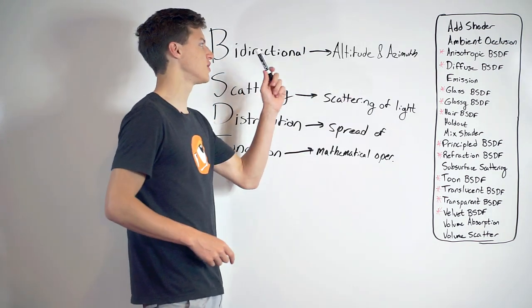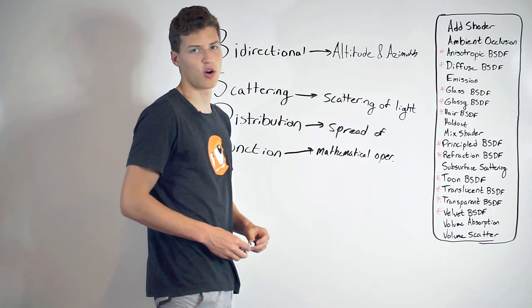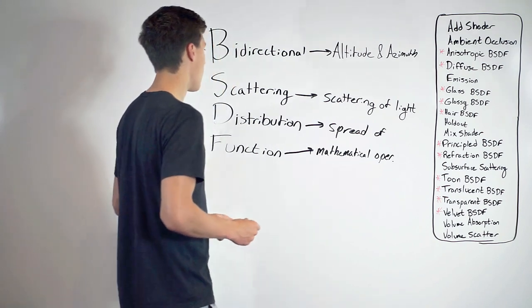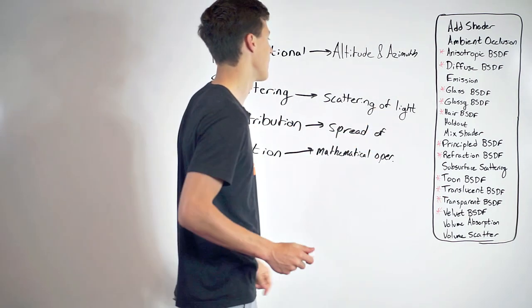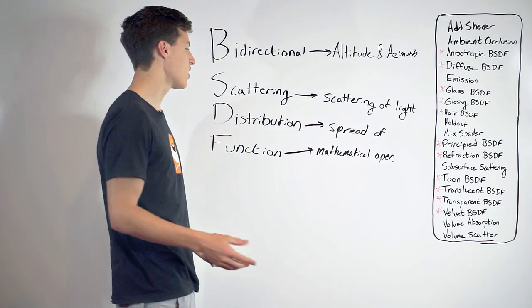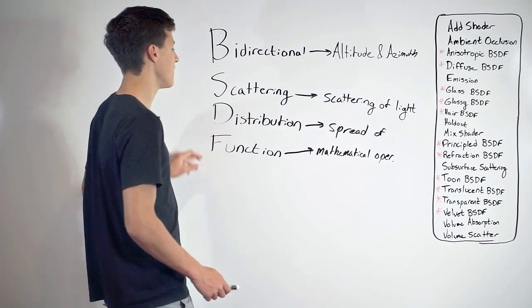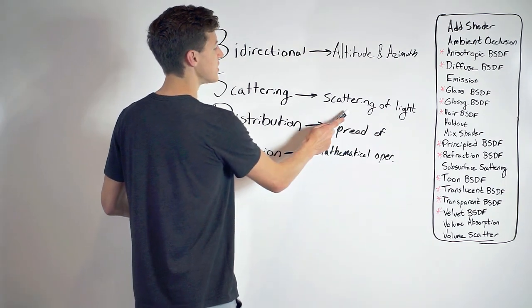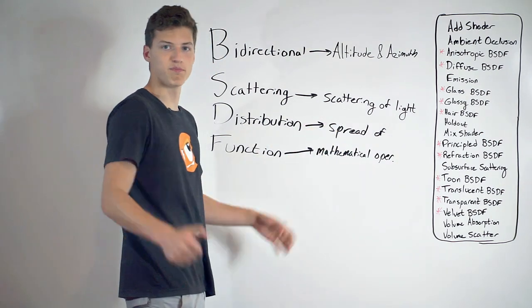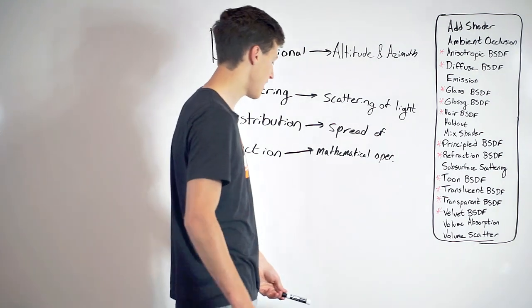And bi-directional refers to the altitude and azimuth angle when ray tracing, which aren't really that important for our understanding. So we're just going to completely ignore that. So basically, what we can conclude from this is a BSDF is a function, a mathematical operation, to calculate the spread of scattering light. Bada bing, bada boom. Now we know what a BSDF is.